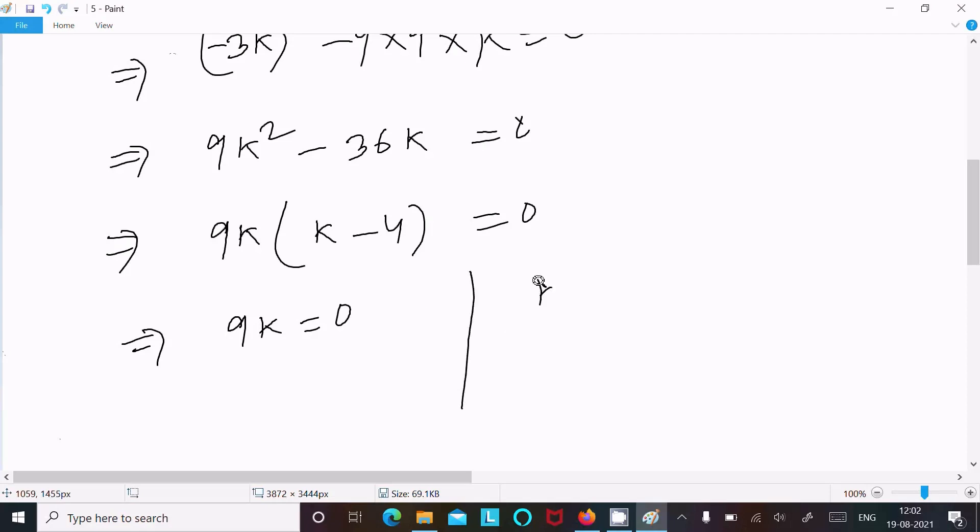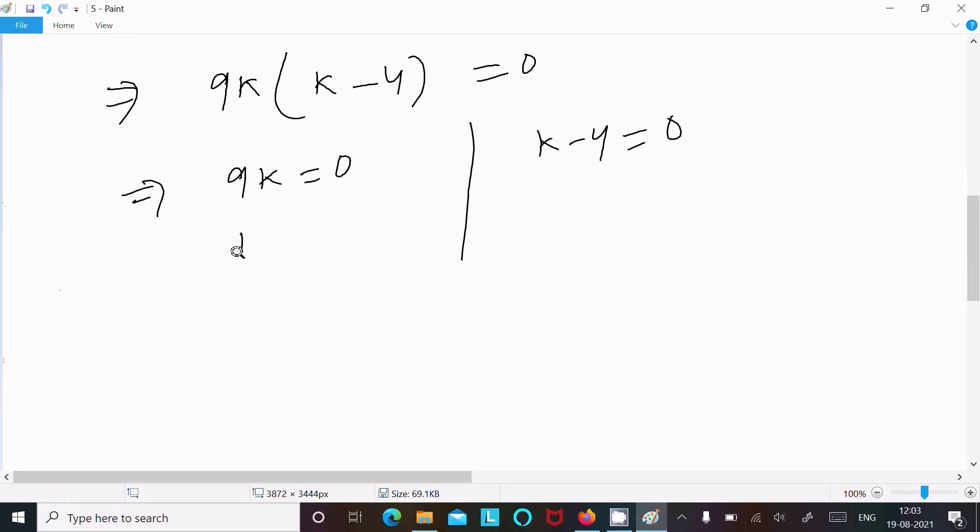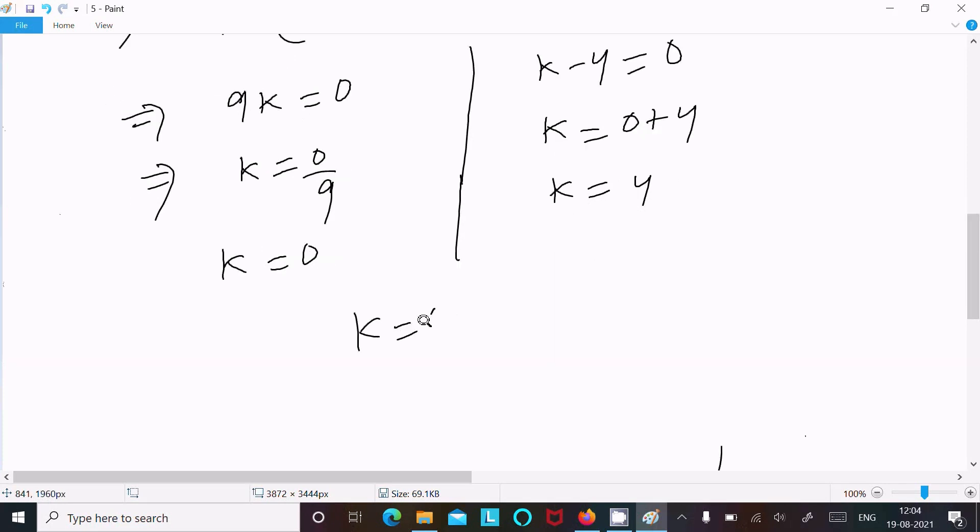Writing here k = 0 divided by 9, so k = 0. And here k = 0 + 4, so k = 4.